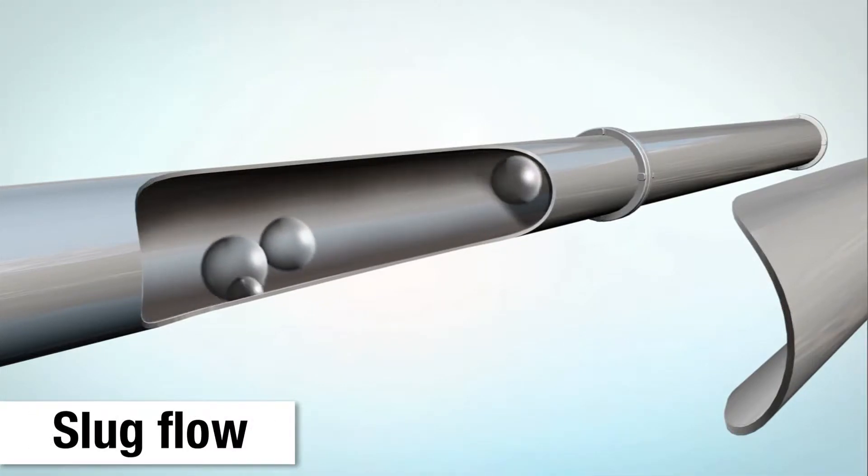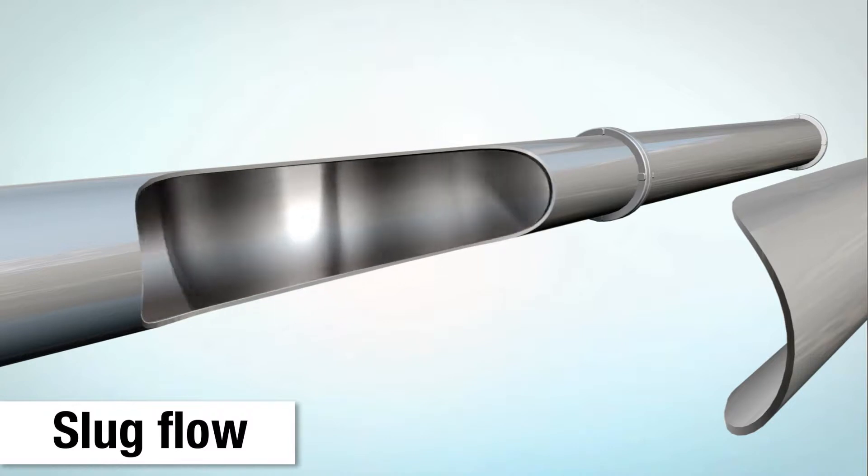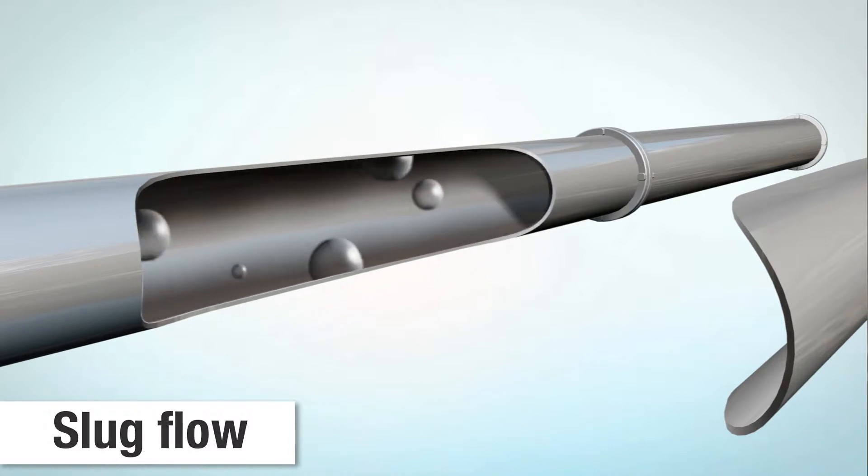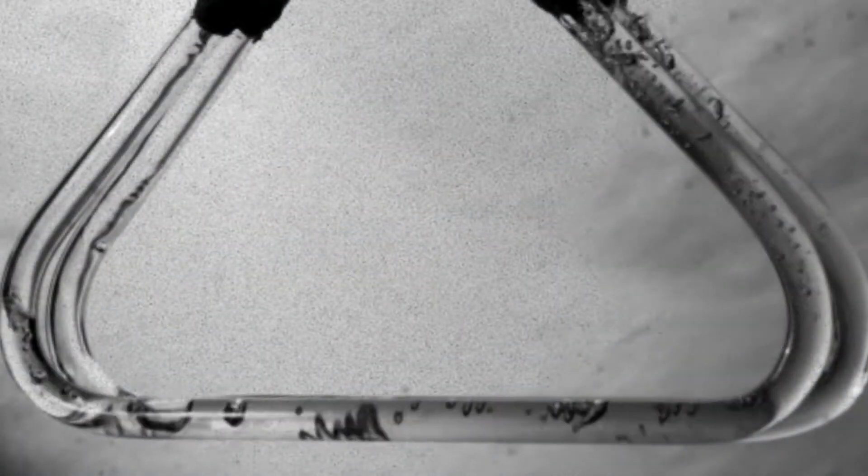Slug flow is usually unintentional and can occur as a result of a process upset in tank farm and oil well applications, where there are periodic, coalesced bubbles.